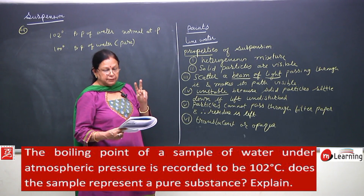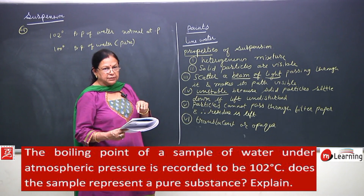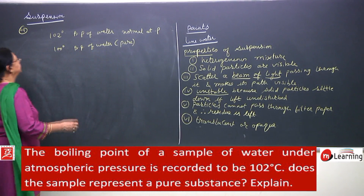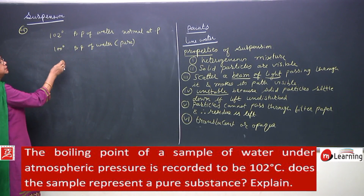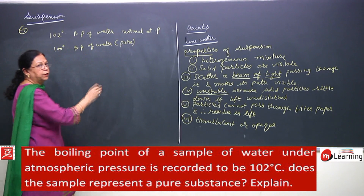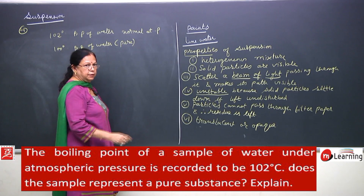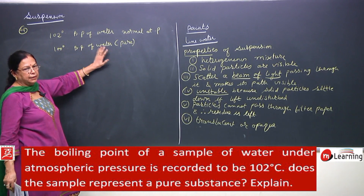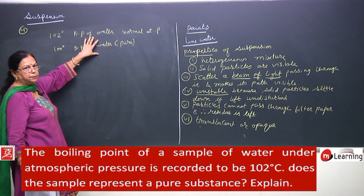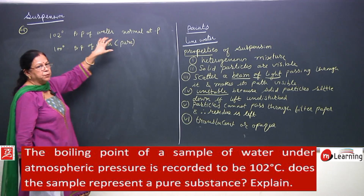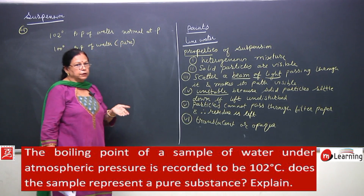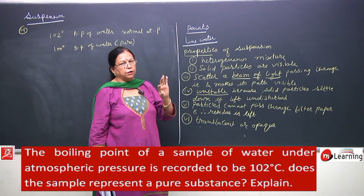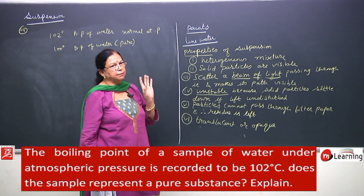For two marks, you also need to explain why it is not pure. Impurities increase the boiling point of a substance. So this water sample contains some impurity, and therefore the boiling point is increased. It is a mixture of water with some impurity.